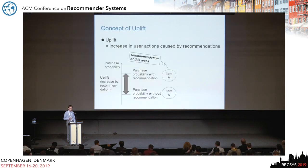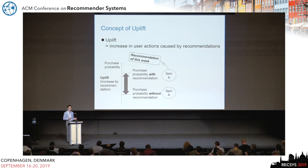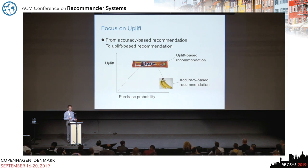To describe this situation, we introduce the concept of uplift, defined as an increase of user action caused by the recommendation. The purchase probability with and without recommendation is different, and the uplift can be regarded as the increase in purchase probability due to recommendation. In this work, we shift from accuracy-based recommendation to uplift-based recommendation. Conventional accuracy-based recommenders try to recommend items with the highest purchase probability, like banana. We try to recommend items with the highest uplift, like chocolate.